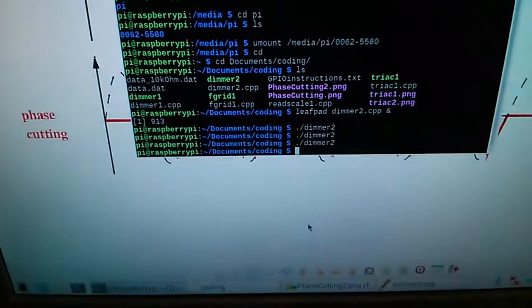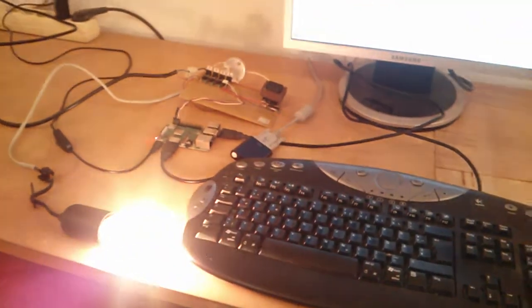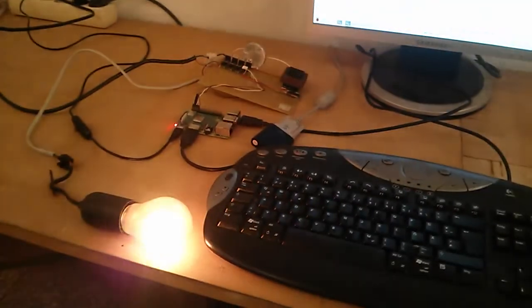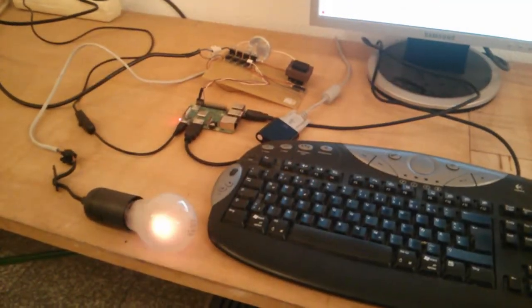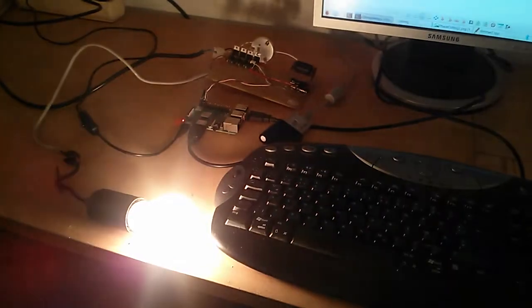Now let's start the program and see what the dimmer does. So enter. And as you can see, the intensity of the light bulb is ramped up and down periodically.